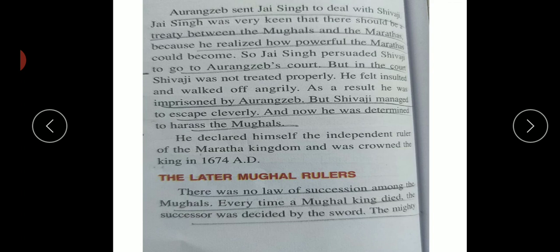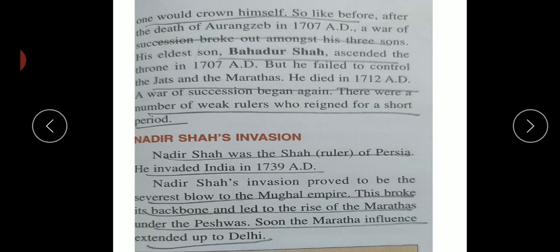After Aurangzeb's death in 1707, there was no strong law or succession; Mughal kings were decided by the sword. The last ruler was Bahadur Shah Zafar. After the death of Aurangzeb, a war of succession began; the Mughals became very weak, resigning power for short periods. Bahadur Shah - also known as Bahadur Shah Zafar - was the last ruler of the Mughal Empire. He failed to control the Jats and Marathas and died in 1712.